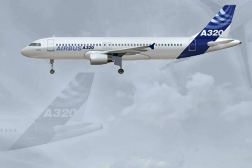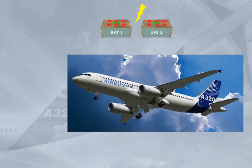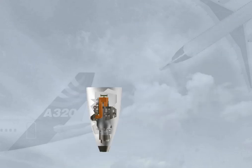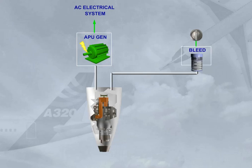The auxiliary power unit, APU, is located in the unpressurized tail cone. It is a self-contained unit which can make the aircraft independent of external pneumatic and electrical power sources. The APU may be started using electrical power supplied by only the aircraft batteries, only the external power source, or the engine generator source. The APU provides AC electrical power for the aircraft electrical system and bleed air for engine start and/or air conditioning.